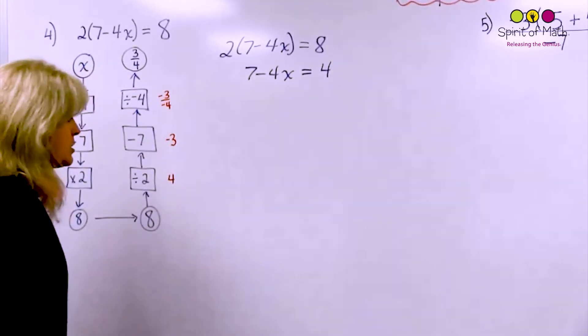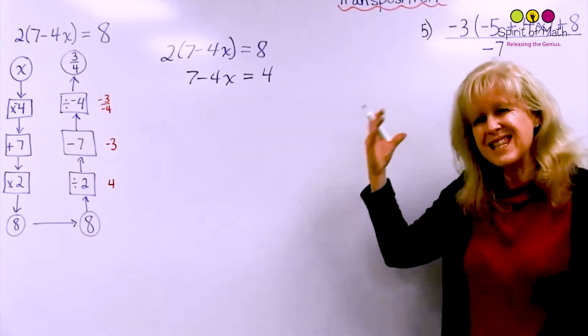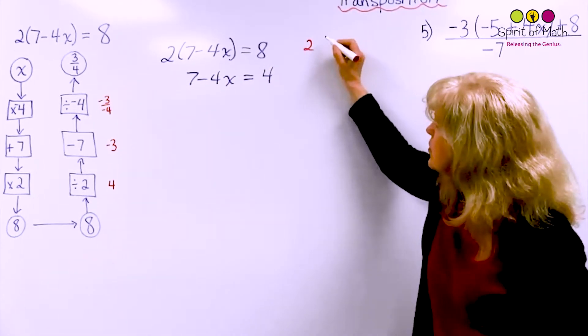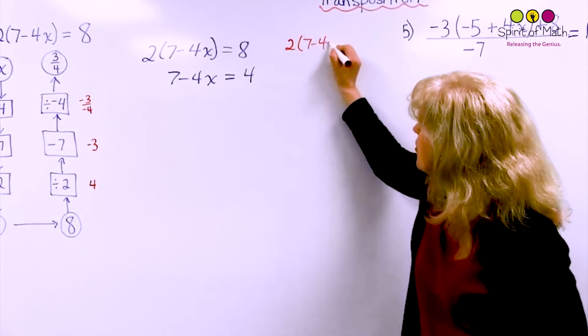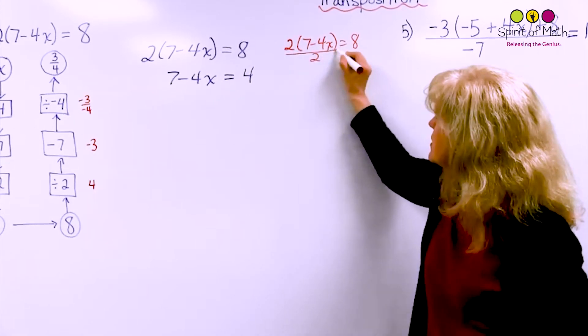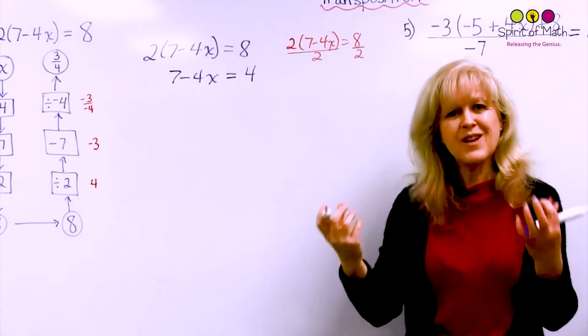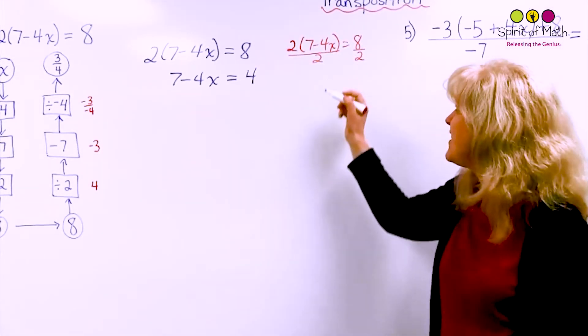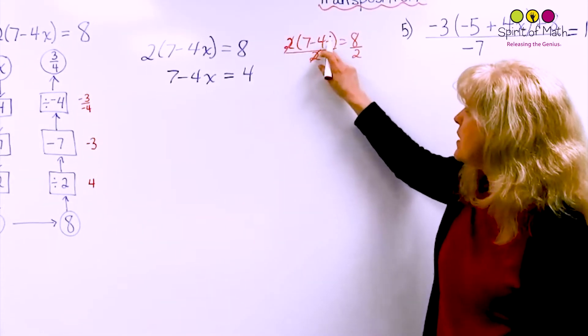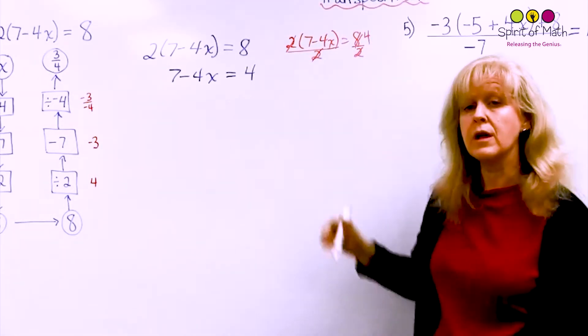So basically, just so that you can see this, what's happened, and some people like to show this but we want you to just do it immediately to the other side. You have 2 times 7 minus 4x equals 8. When you divide by 2 on that side, you're also dividing by 2 on this side. You have to treat them equally, so you do the same thing to one side as the other side. And 2 divided by 2 is 1, and you're left with 7 minus 4x equals, and this is basically 4.